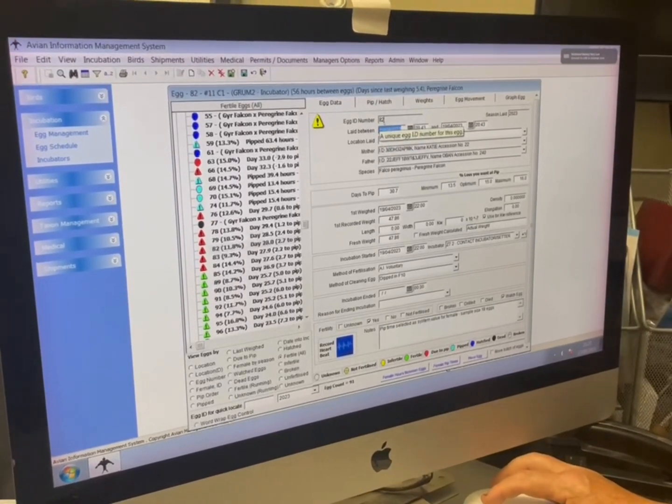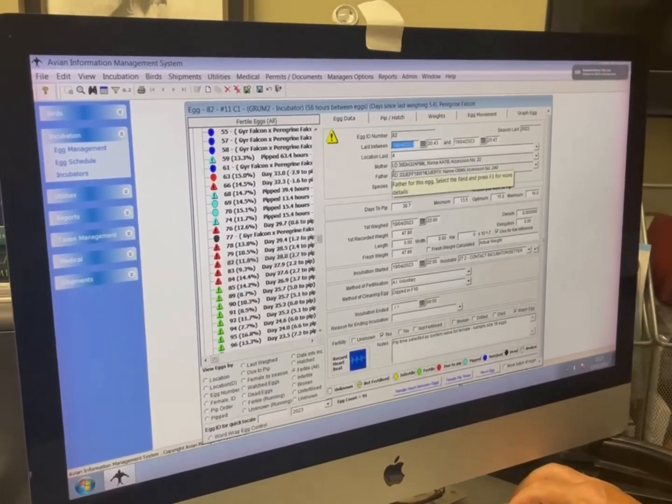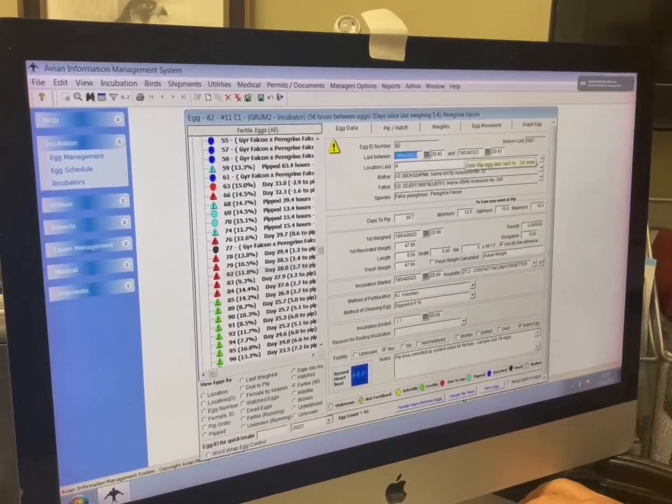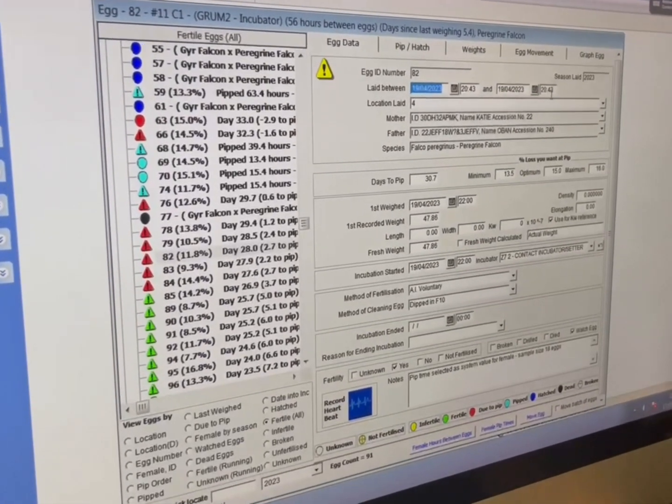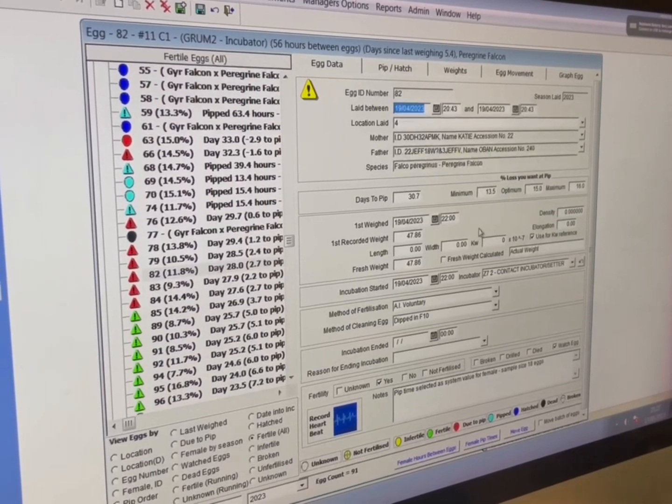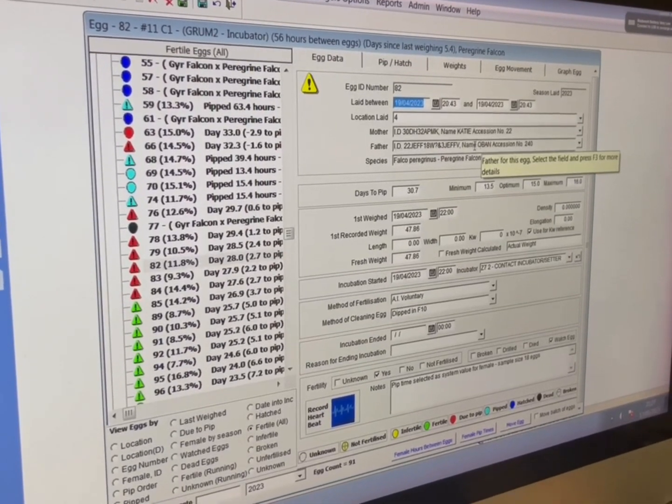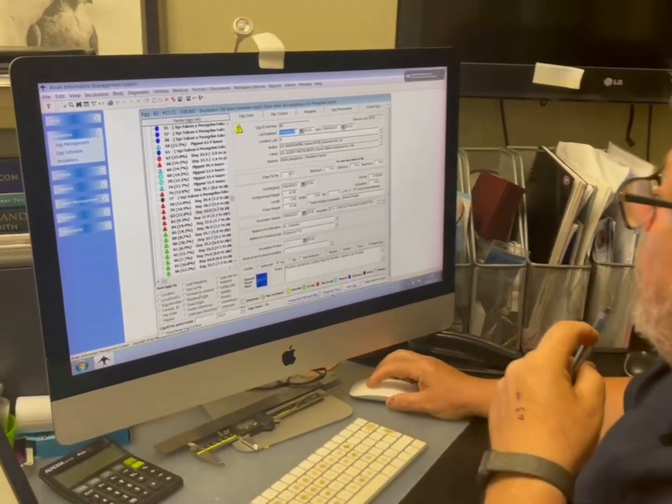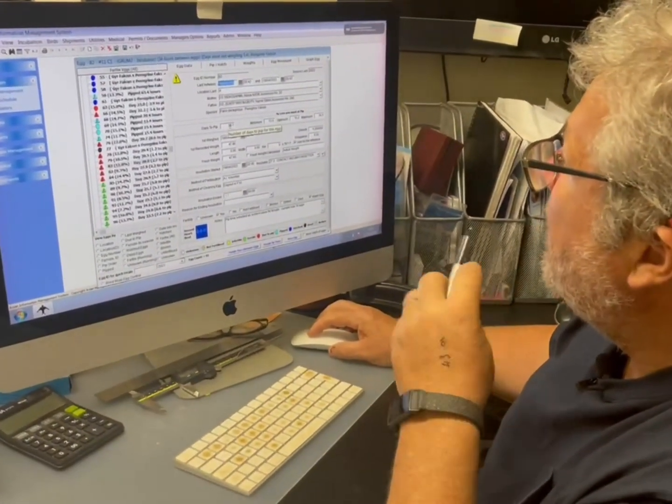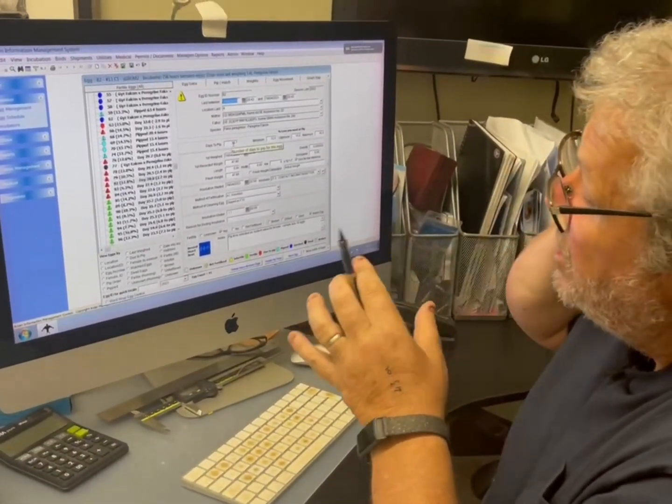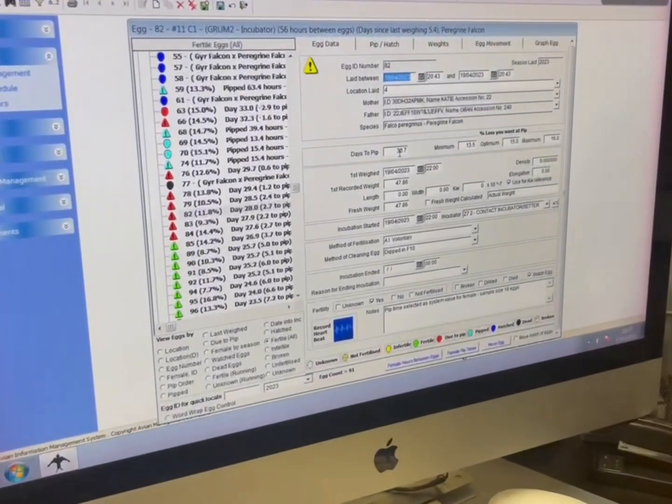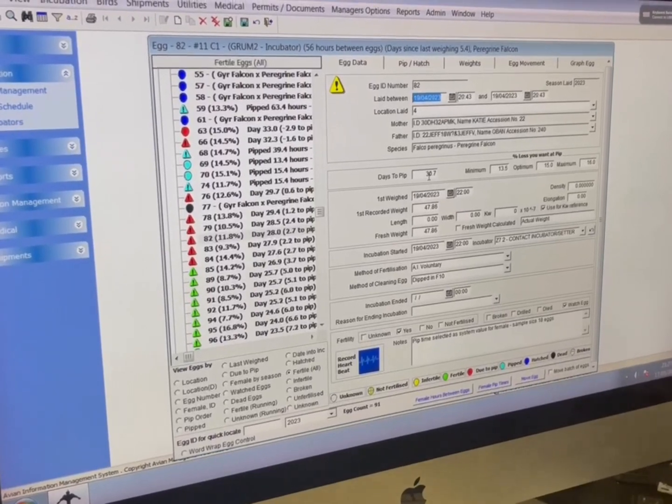So right, here's what we do. So one, we've got an egg, it's been laid, we wait. We know the date and the time it was laid, exactly 2043. That's the mother, that's the fella. So that's going to be a pure peregrine because he's a peregrine. The days to pip: 30.7. This program changes. The more eggs you put in from a particular female, it takes an average on how many days to pip.